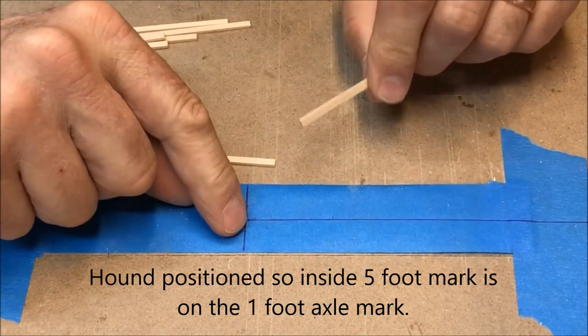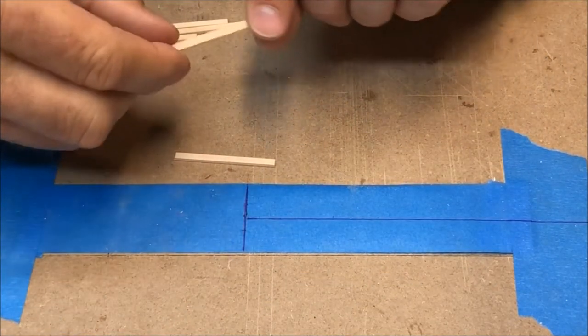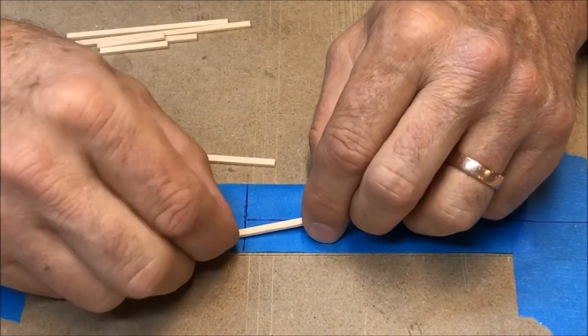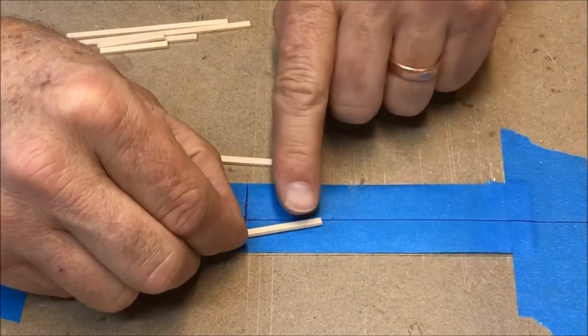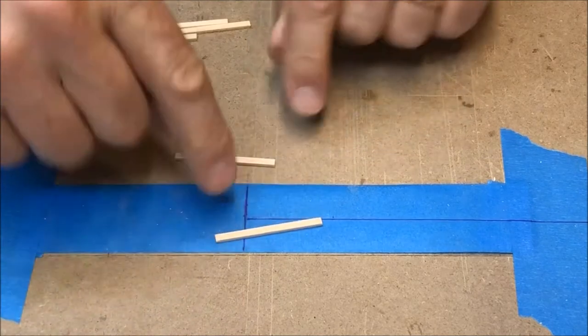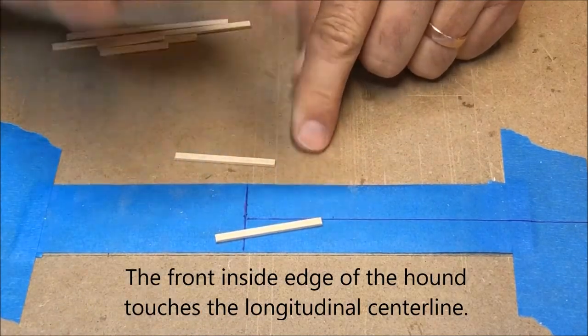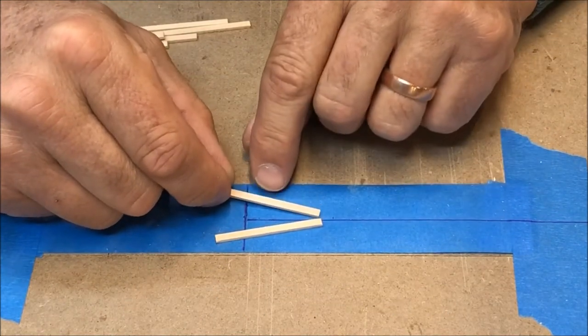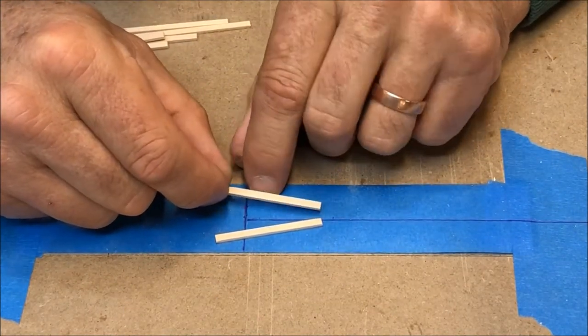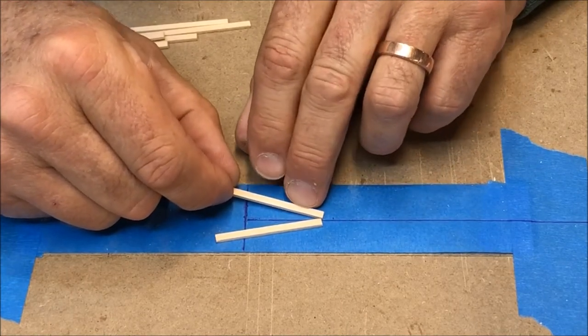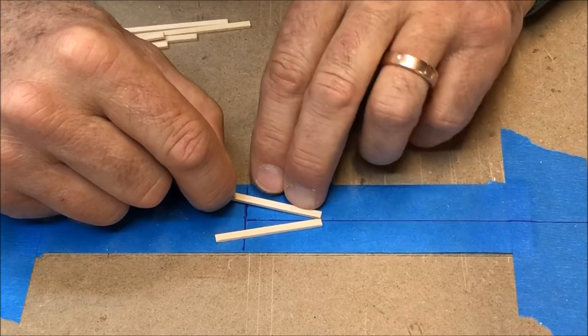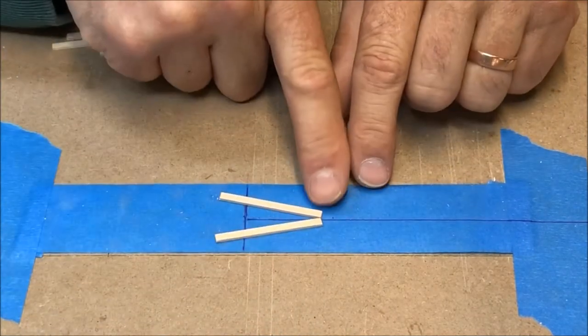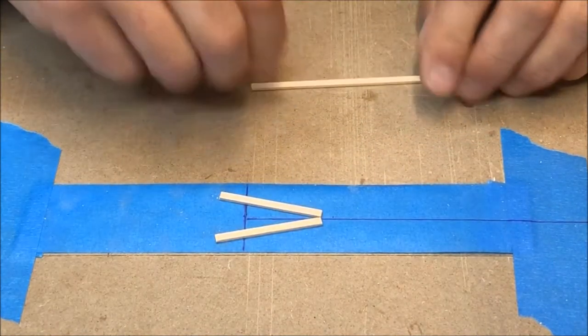Then like the rear suspension what we want to do is we want to have the inside edge of the hound at the five foot mark right on the axle mark at its one foot out from midline. So I'll put that mark on the template and then I want to just have the front end inside edge touch the midline at that point. Let's do the same for the opposite side so the five foot back mark on the hound will be at the one foot out mark from center line and it will just touch on the center line, the other hound.